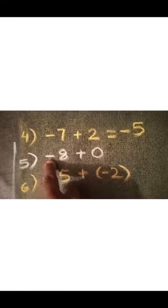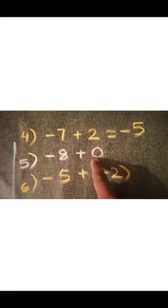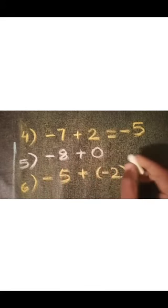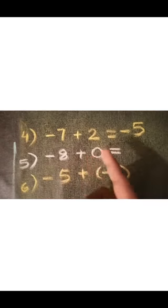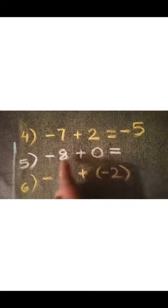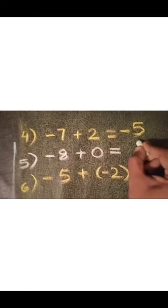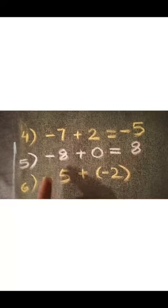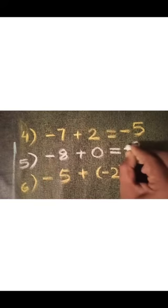Next question: minus 8 plus 0. Here 8 is a negative integer and we are adding it with 0. We subtract the smaller from the bigger one, so we subtract 0 from 8. The answer is 8. The bigger number is 8, so we give it the sign of the bigger number. The answer is minus 8.